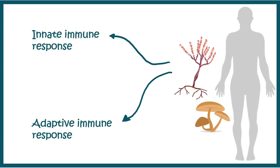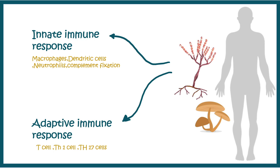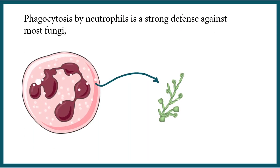Against fungal pathogens, our body mounts two types of immune response: the innate response, which is limitedly specific, and the adaptive immune response, which is highly specific. The innate immune response components involve macrophages, dendritic cells, neutrophils, and the complement cascade, whereas adaptive immune components such as Th1 and Th17 subpopulations of helper T cells play a crucial role against fungal infection.